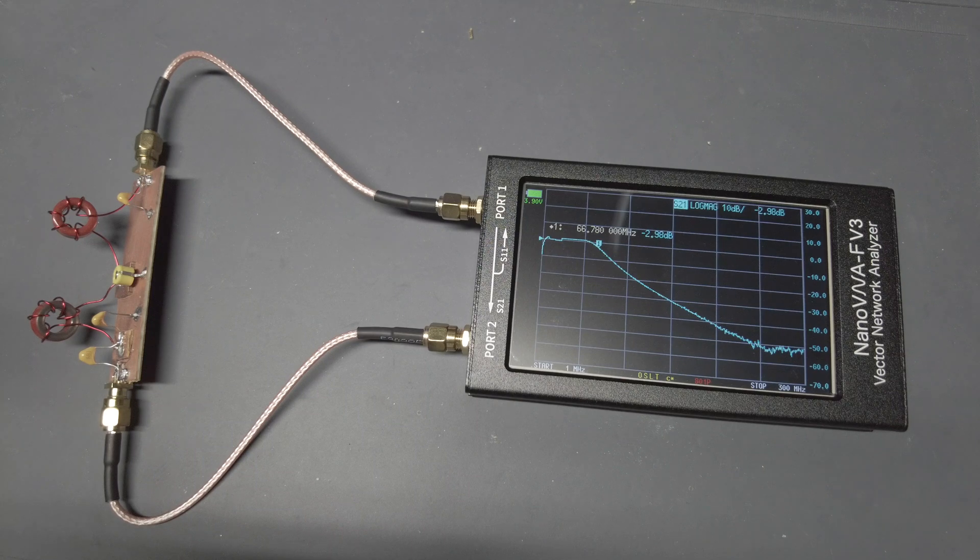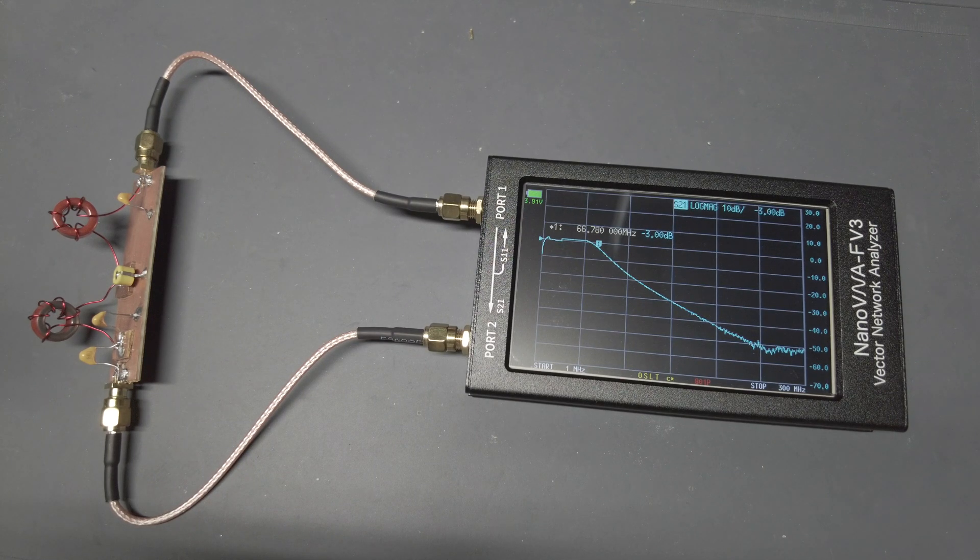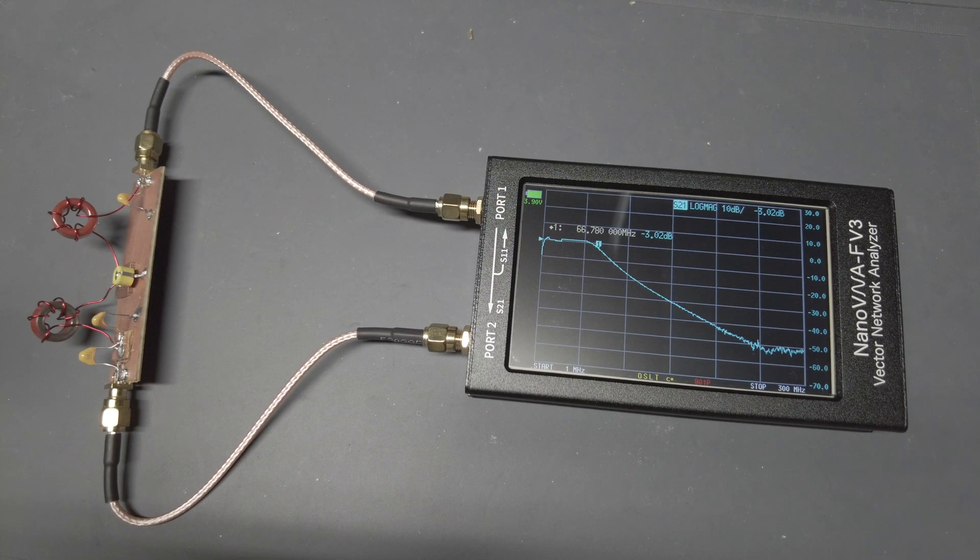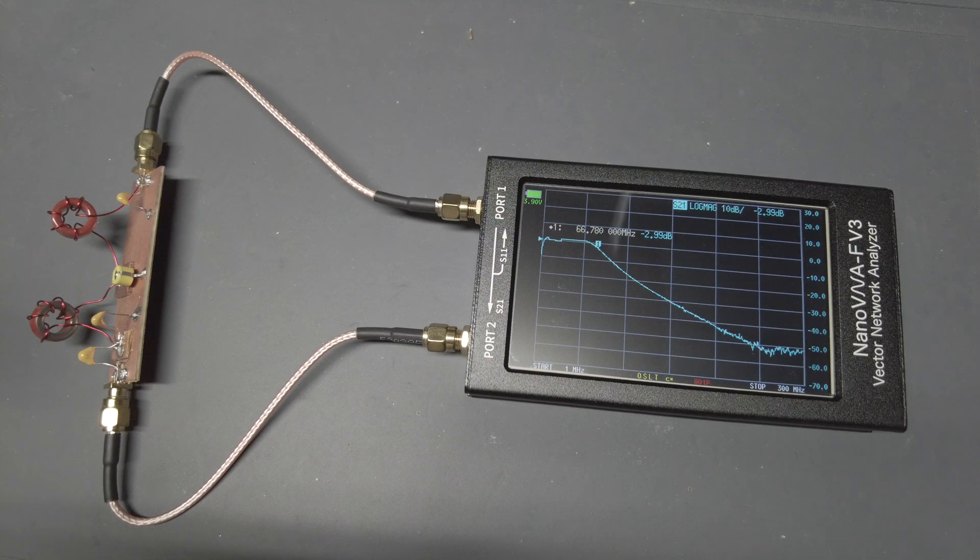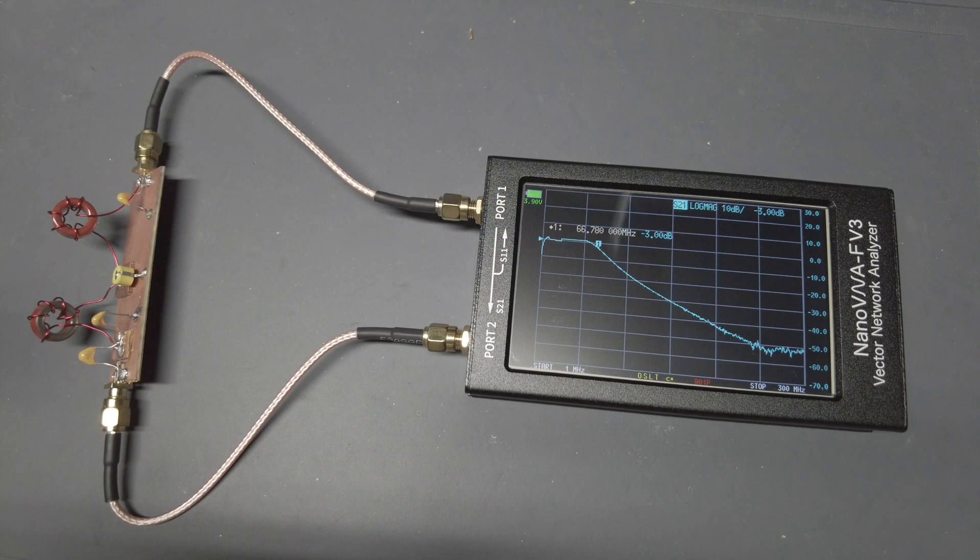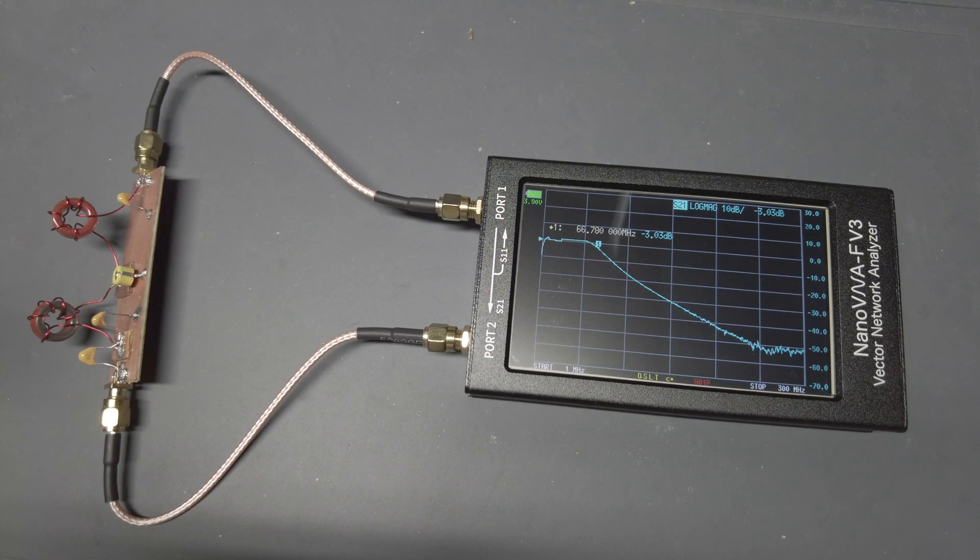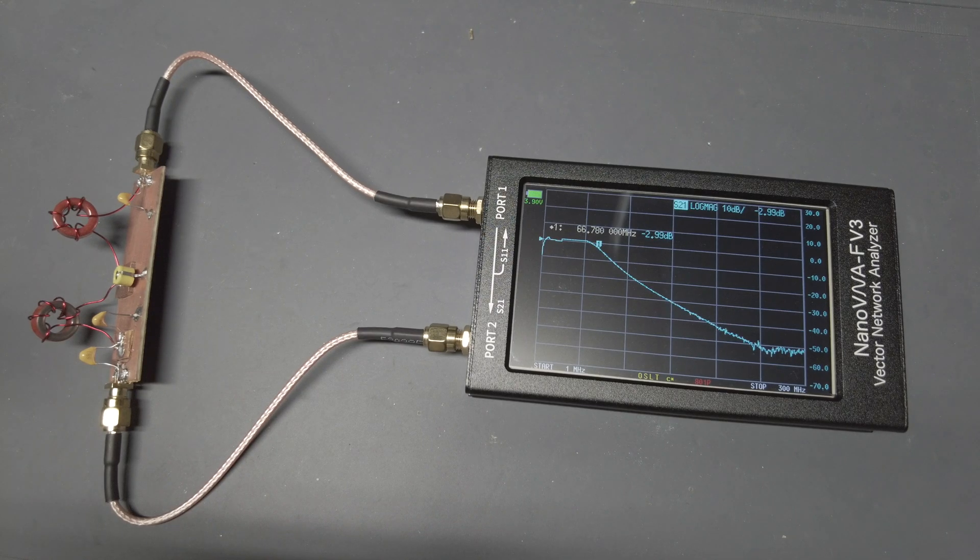Now a vector network analyzer is more than just an antenna analyzer, because it can not only measure reflected power, but it can measure power through a device, because it has an input and an output. If you connect a device under test to the input and the output of the vector network analyzer, it can sweep and show you how much power is going through the device at the frequencies it sweeps across. So it's basically a plot of the frequency response of the filter. It will show you what frequencies can pass through the filter and what frequencies are being attenuated. Now you can see here that I've connected my ugly filter to the NanoVNA. Let's take a closer look.